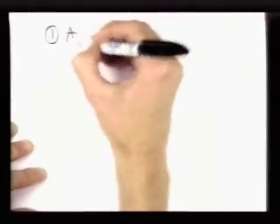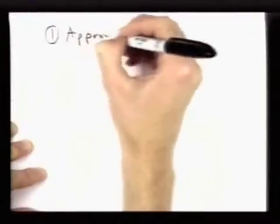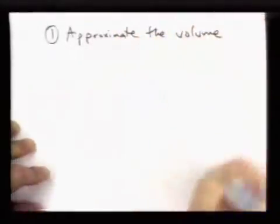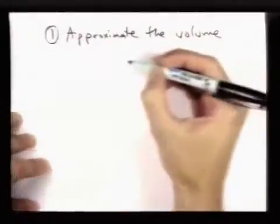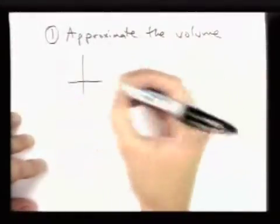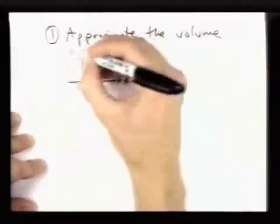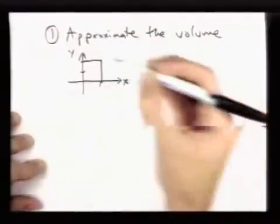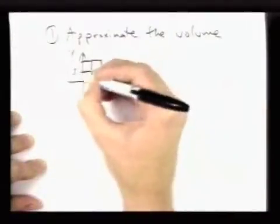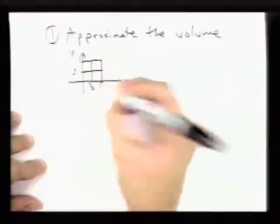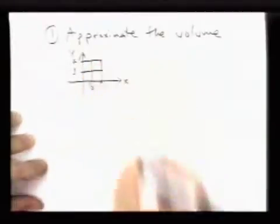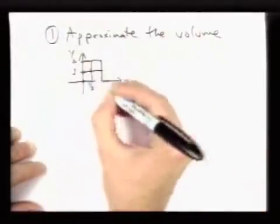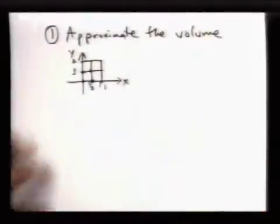To approximate the volume under the surface, we approximate the figure with rectangular prisms. I'm going to take the rectangle in the xy plane and divide this into 4 rectangles. Maybe I'll divide going 1/2 to 1, 1, 2. Now I'll evaluate the function at each of the points on the corners to get the height of a rectangular prism.